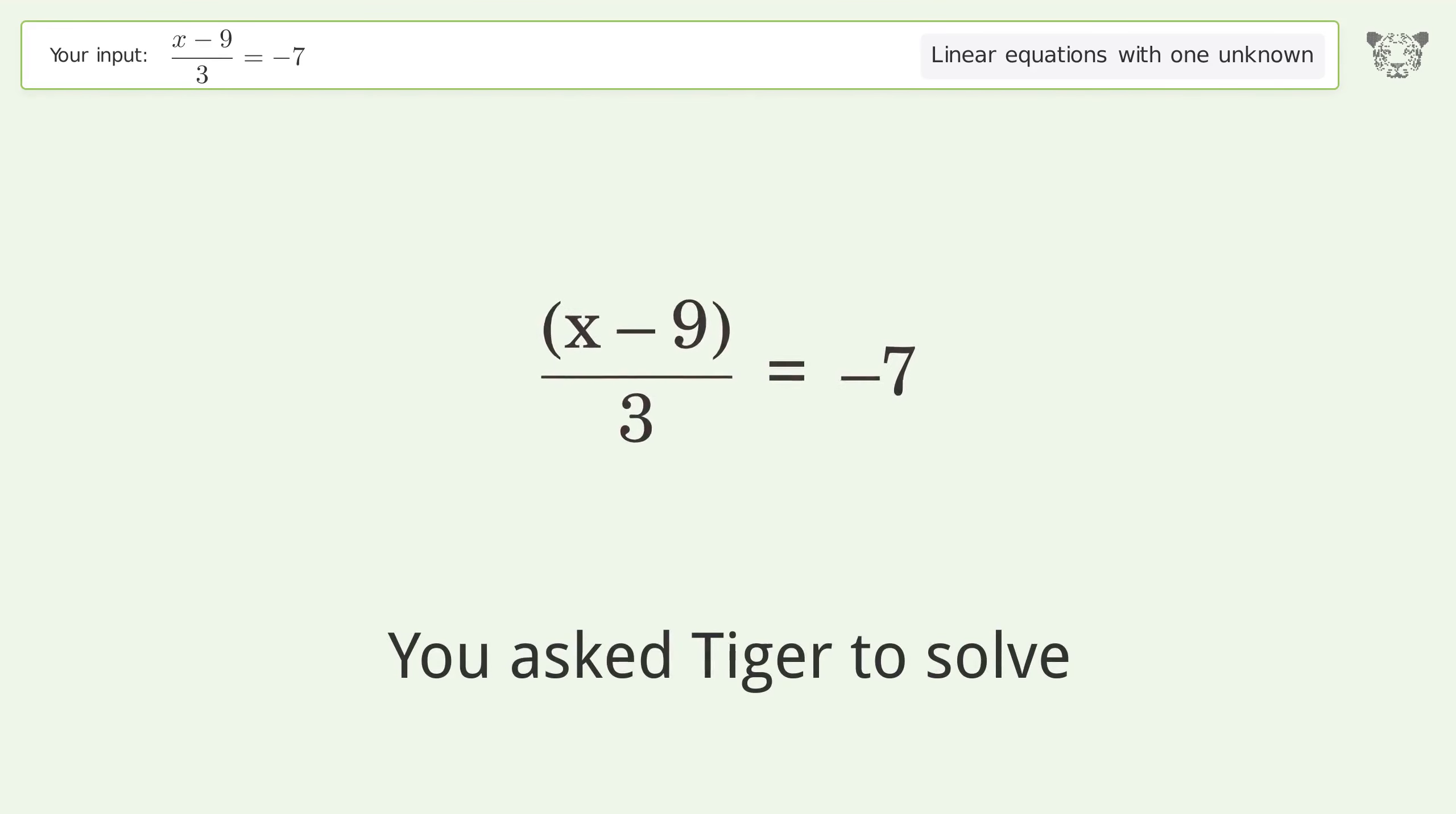You asked Tiger to solve this. It deals with linear equations with one unknown. The final result is x equals negative 12.